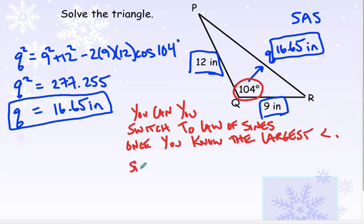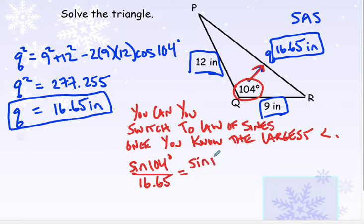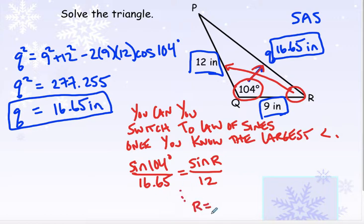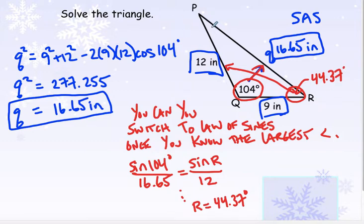I can do sine of 104 divided by the side across from it, which we now know is 16.65. Then I can do either angle — let's do angle R — divided by the side across from angle R, which is 12. When you cross multiply and solve that, you're going to get 44.37 degrees for R. Then if I want angle P, I do 180 minus 104 minus 44.37, and angle P will be 31.63 degrees.